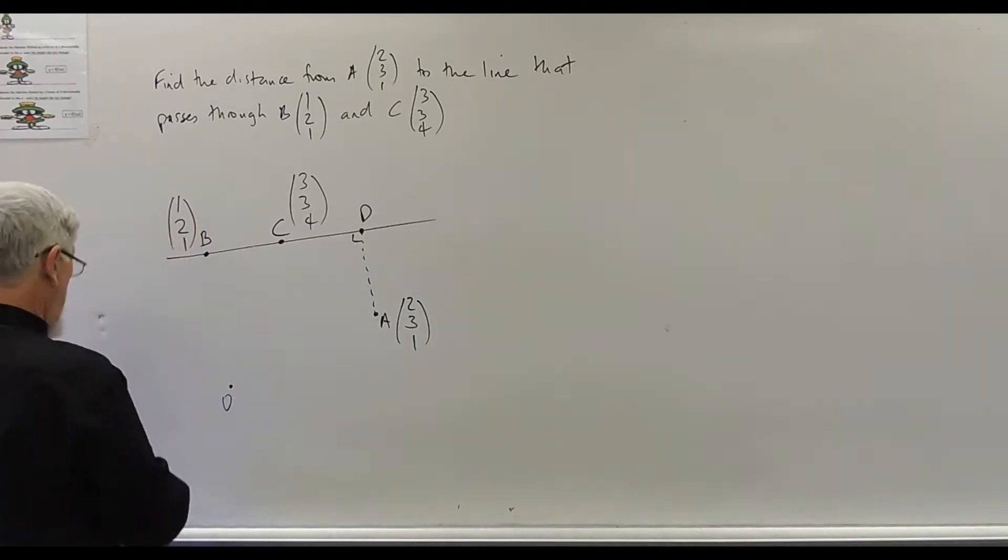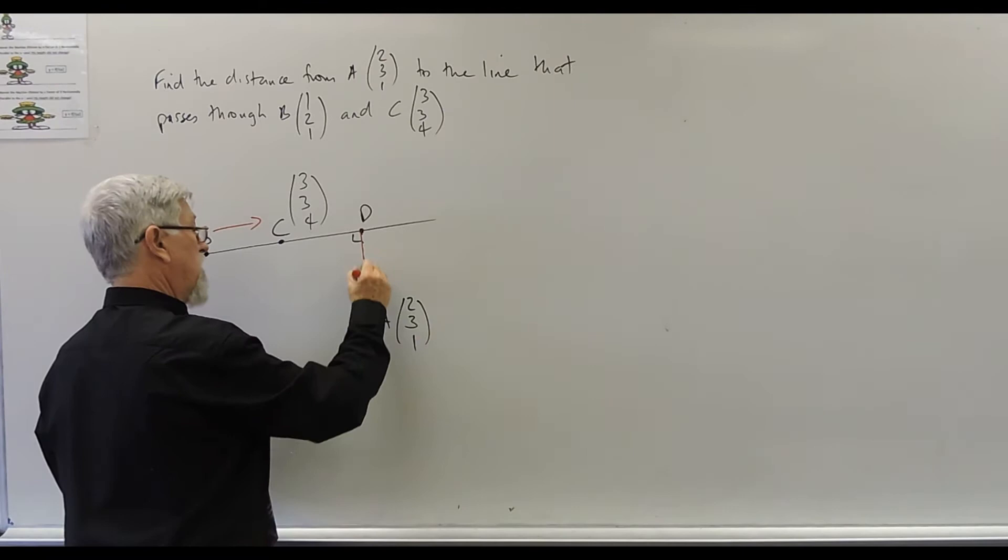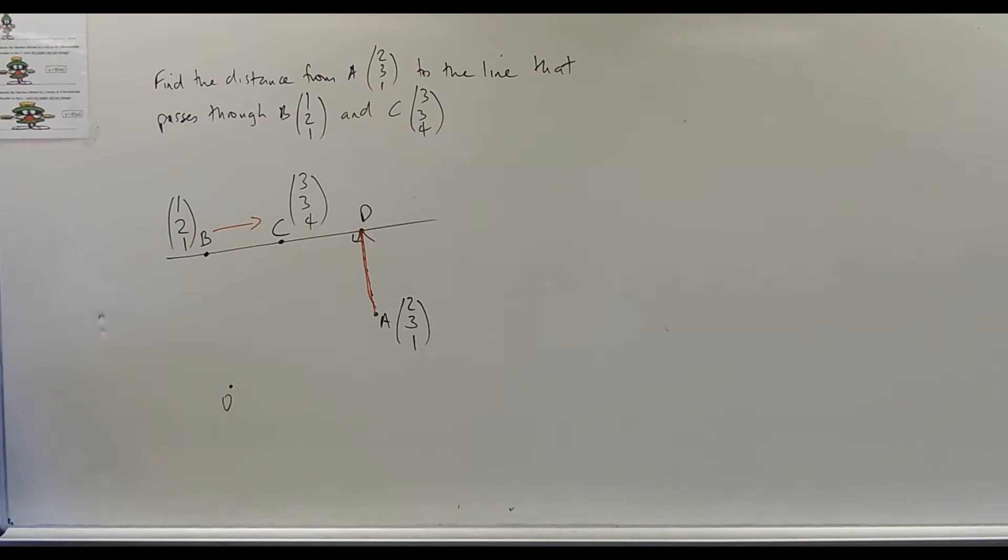I want a vector multiplied by another vector. And if I get a vector times a vector and it's equal to zero, I know they're perpendicular. I need that vector equation, I need that vector equation.